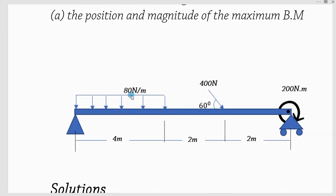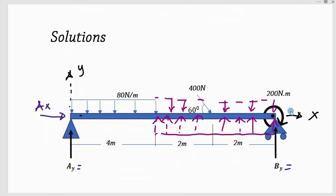This is our beam with the uniformly distributed load, and there is a 400 newton force acting at 60 degrees to the horizontal. We have a concentrated moment at the end of the beam where we have the roller support. First of all, you need to draw the free body diagram, indicate the axes Y and X, and indicate the origin. This point here is the origin.